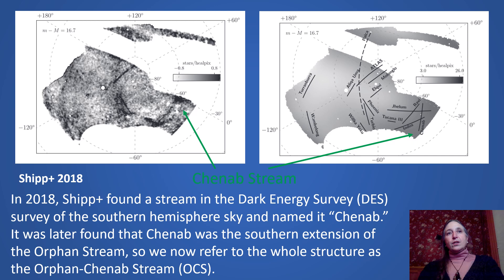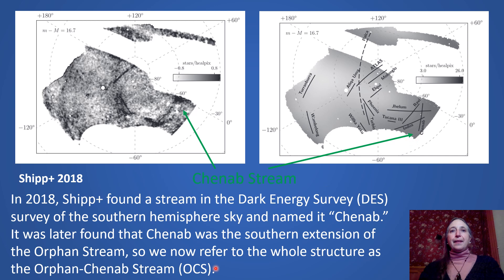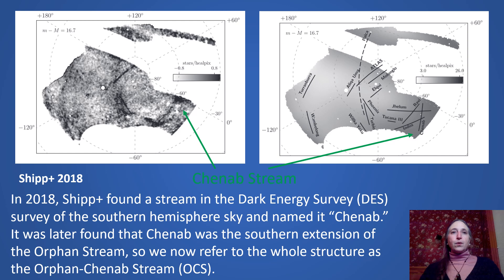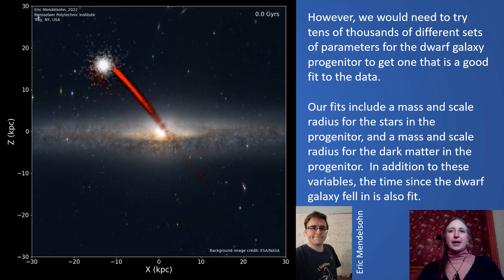Another group in 2018 looked at data in another part of the sky — our data was in the north, and this data was in the south — and found the Chenub stream, which is very faint. You can see in the picture on the right where the Chenub stream goes. They didn't know at the time that the Chenub stream is actually the same stream of stars coming from the same dwarf galaxy as the Orphan stream in the north. Because it was named two different things, we now call it the Orphan-Chenub stream, or OCS.